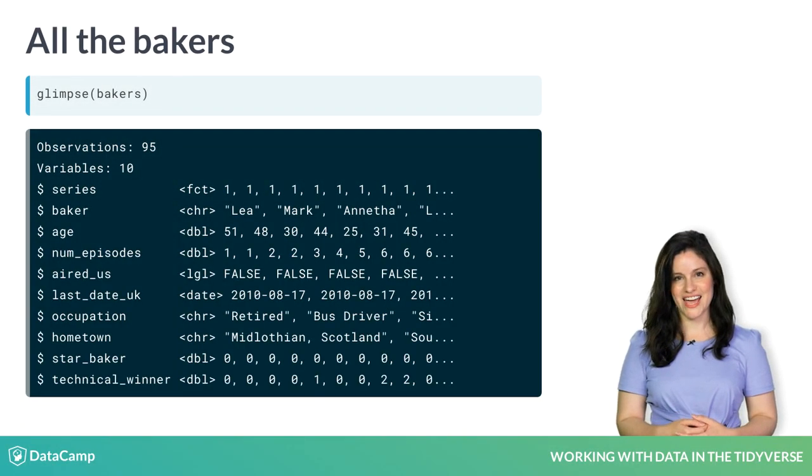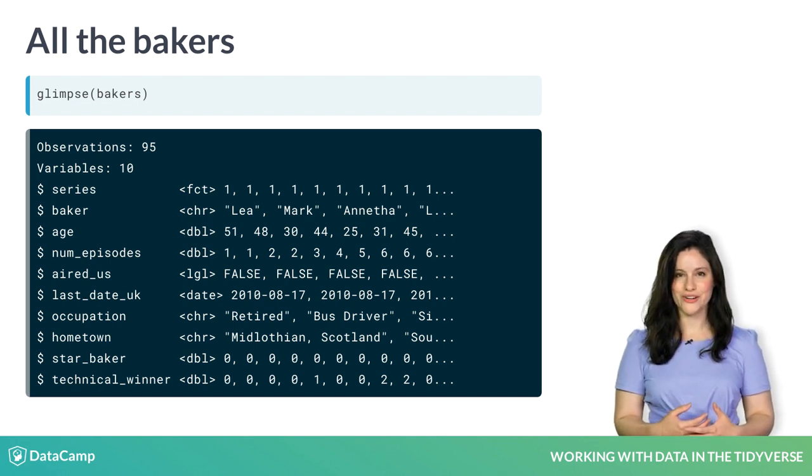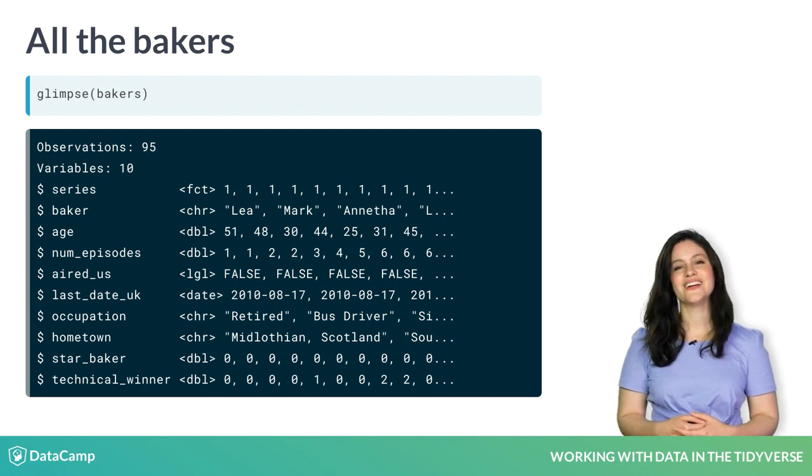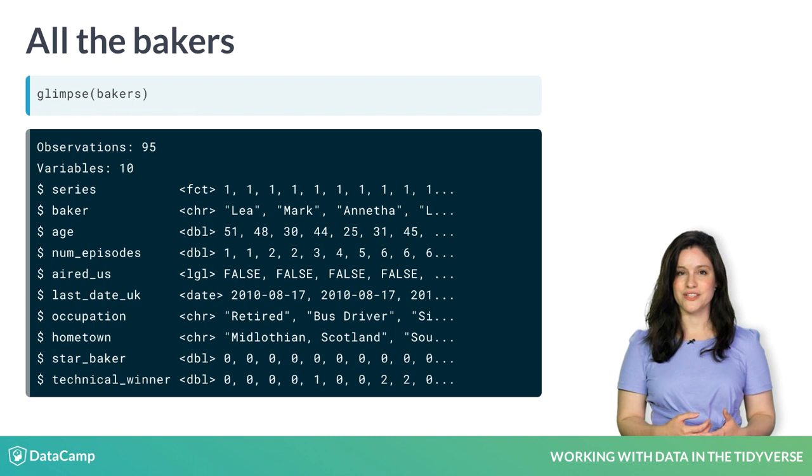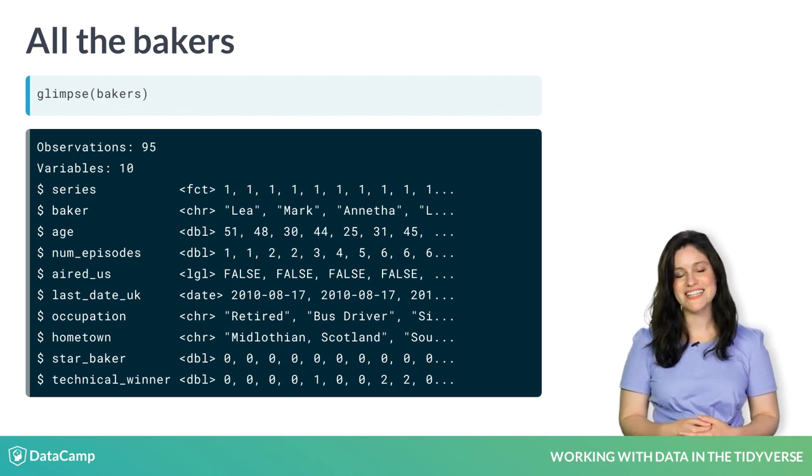We'll work with the baker's data again, but this time we'll use the full data for all bakers who have appeared on the Great British Bake Off. Here is a glimpse of bakers. We have 95 observations, or bakers, and 10 variables.